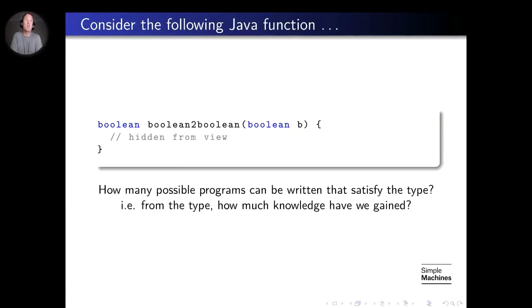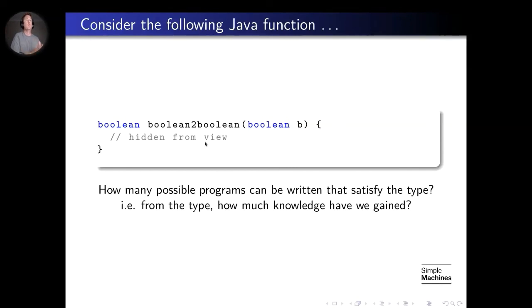Consider this program written in Java. It takes a Boolean and returns a Boolean. How many possible programs can be written that satisfy this type? That is to say, how many different things can be written there so the type is satisfied? Remember that two programs are equivalent if, given the same set of inputs, they produce the same output. So how many possible programs exist with this type, assuming we are functional programming and assuming fast and loose reasoning — so it must terminate and cannot use an escape hatch?